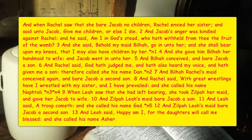In verse two, Jacob's anger was aroused against Rachel and he said, 'Am I in the place of God, who has withheld from you the fruit of the womb?' So Jacob had the wisdom of knowing that God takes care of these things, though he didn't know exactly at that time how important it was that God was in control.